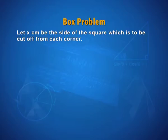Starting with an understanding of what you have and what you do not. In this case, we want to cut off squares from the corner and we do not know the dimension of that square. So, let x centimeter be the side of the square which is to be cut off from each corner.